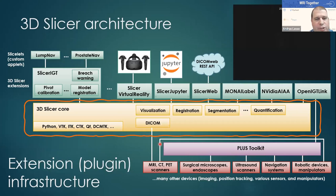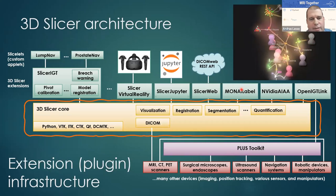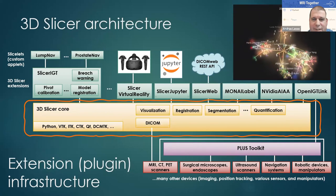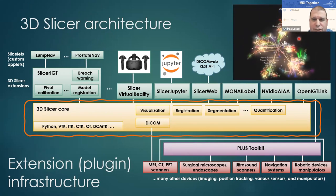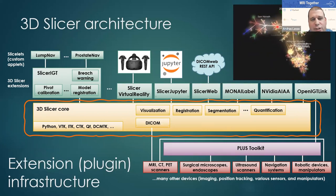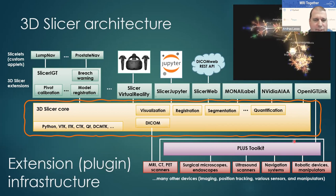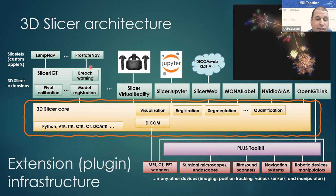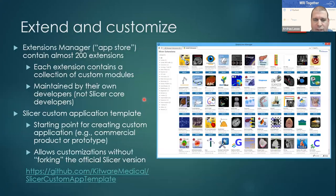A key factor was also changing the application infrastructure to be extensible. The Slicer source tree structure changed significantly over time — there were lots of changes until about 2014, and then the structure stabilized. This was due to splitting the code into a core and moving most features to separate extensions that can be maintained by other developers, not just Slicer core developers. The result is an app store-like extension index containing nearly 200 extensions with all kinds of features developed and maintained by various developers around the world.